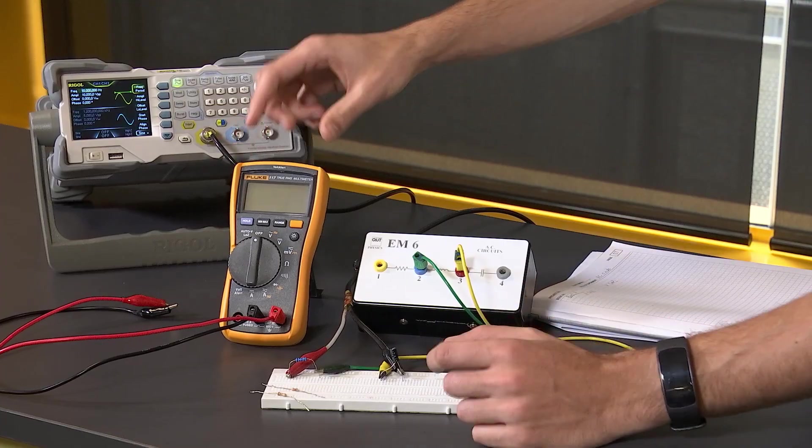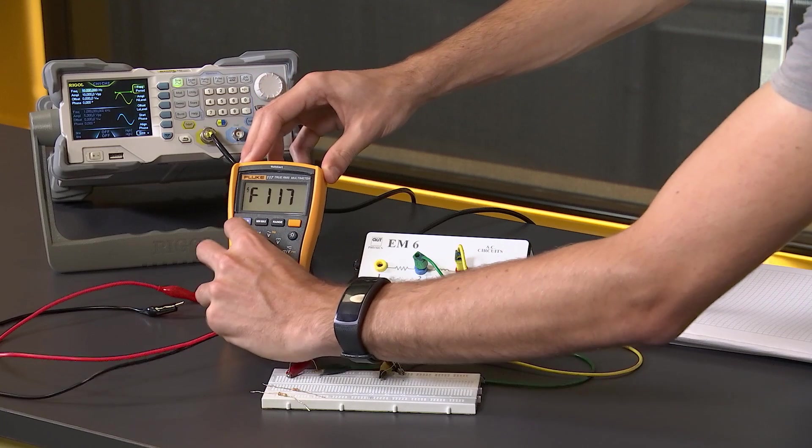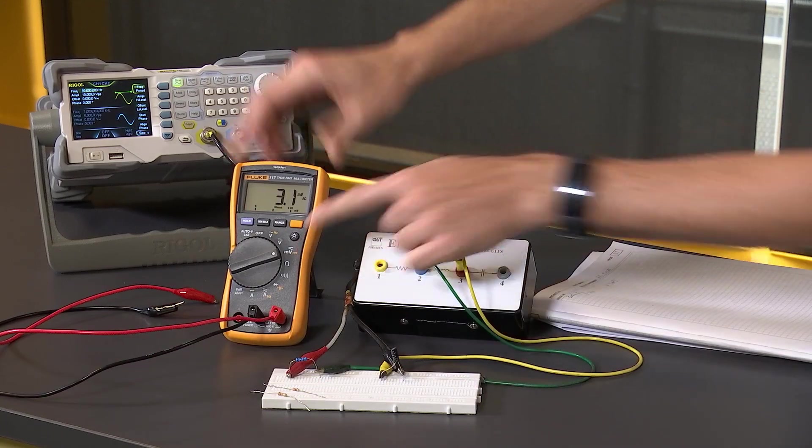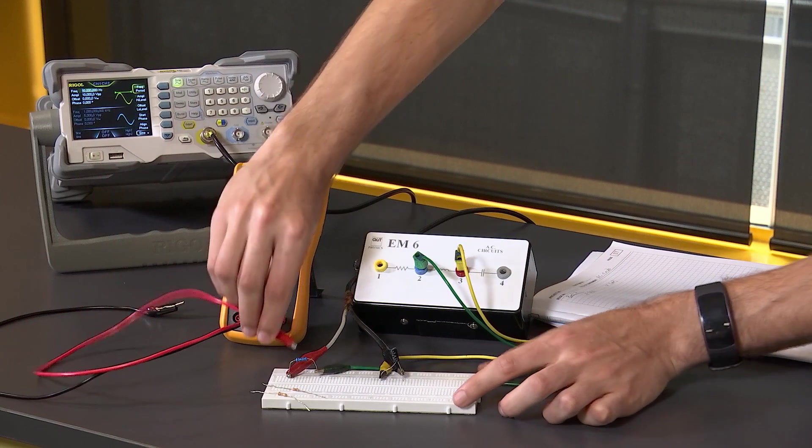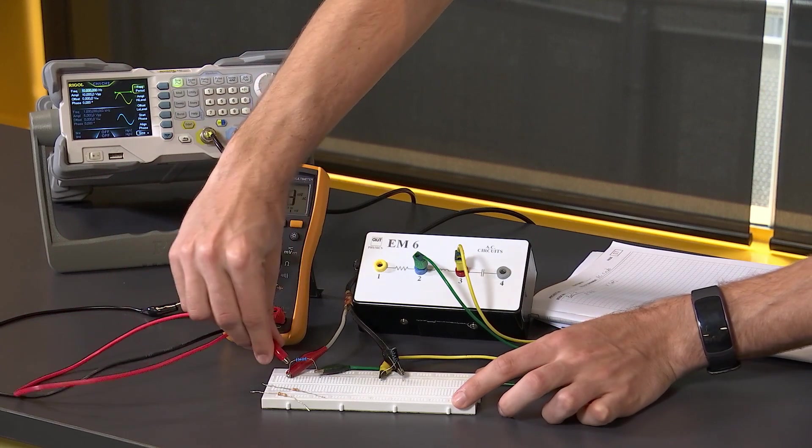I'm going to switch on the multimeter into millivolts AC and connect the cables to measure the voltage drop across the resistor.